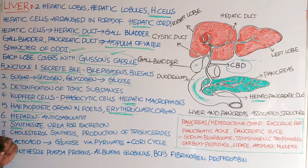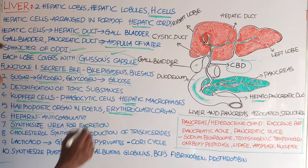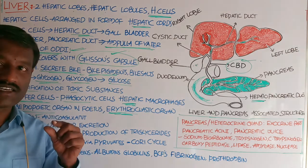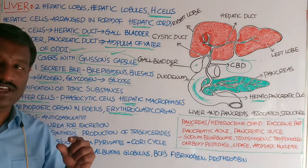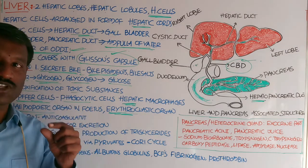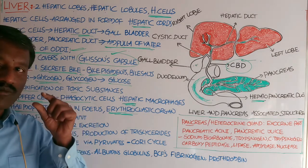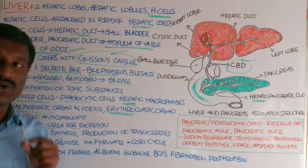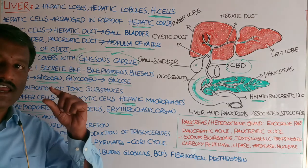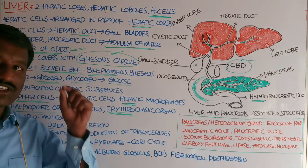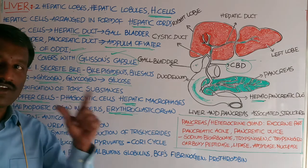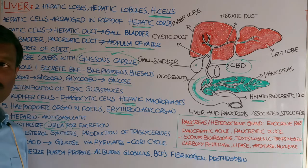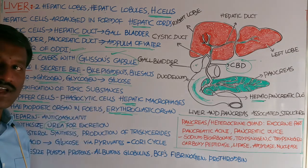The liver helps in the synthesis of urea for excretion. Deamination of excess amino acids occurs in the liver cells, forming ammonia, which is finally converted into urea by the help of the ornithine cycle, also occurring in liver cells. The urea is then transferred to the kidneys for elimination.